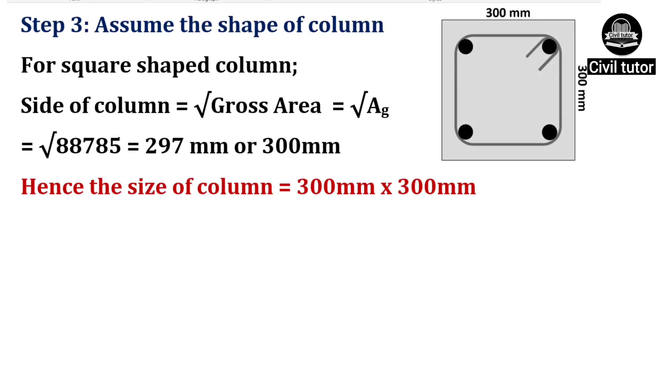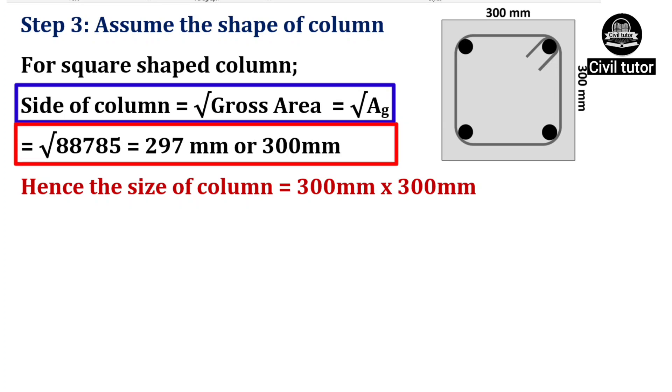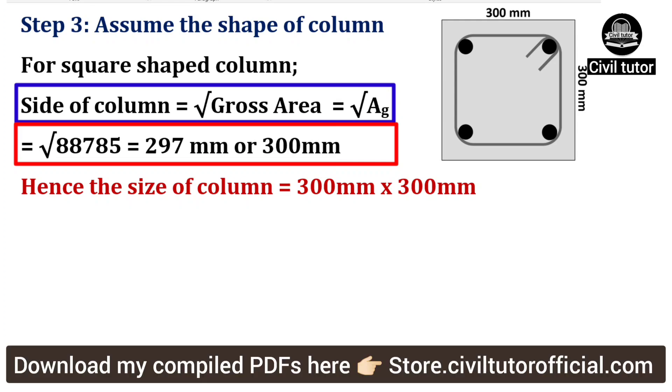The last step will be to assume the shape of column. For a square shaped column, the side of column will be equal to square root of gross area, which will be equal to square root of 88,785 mm equal to 297 mm or we can take it as 300 mm. Hence, the size of column will be 300 mm into 300 mm.